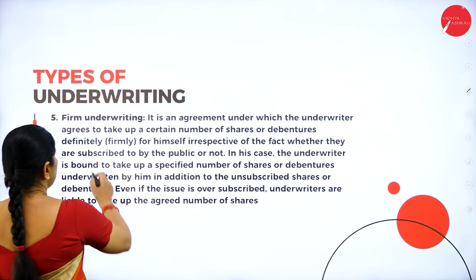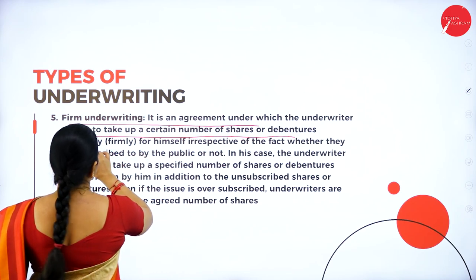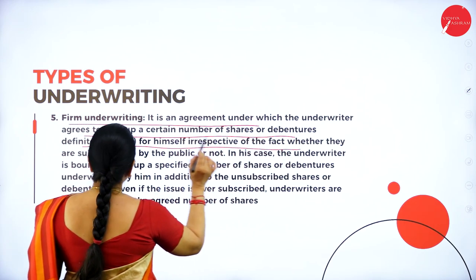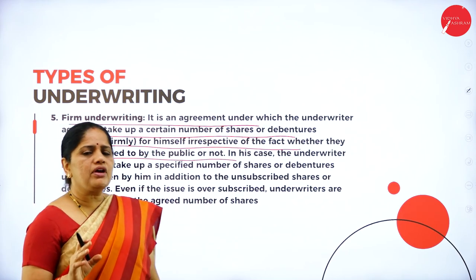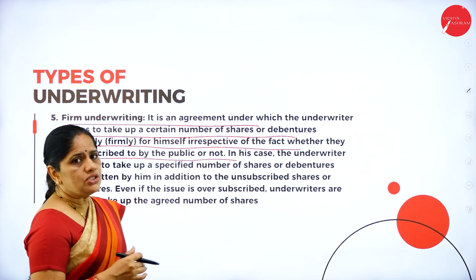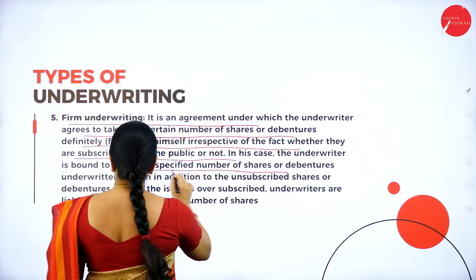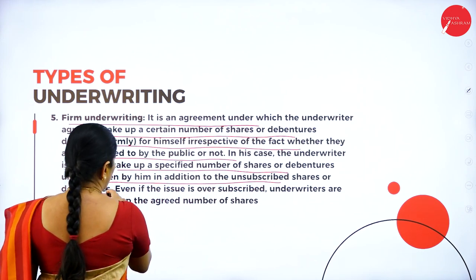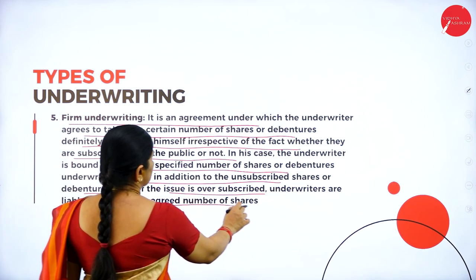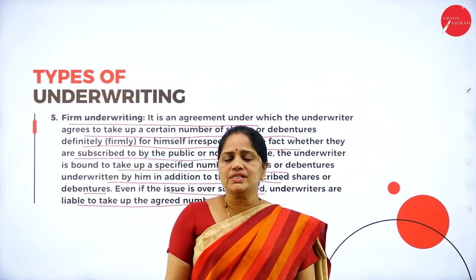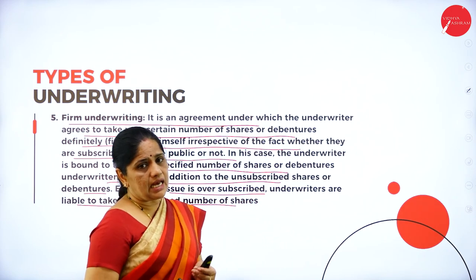The last type is firm underwriting. It is an agreement under which the underwriter agrees to take up a certain number of shares or debentures definitely for himself, irrespective of whether they are subscribed by the public or not. The underwriter is bound to take up the specified number of shares underwritten in addition to the unsubscribed shares. Even if the issue is oversubscribed, the underwriter is liable to take up the agreed number of shares.